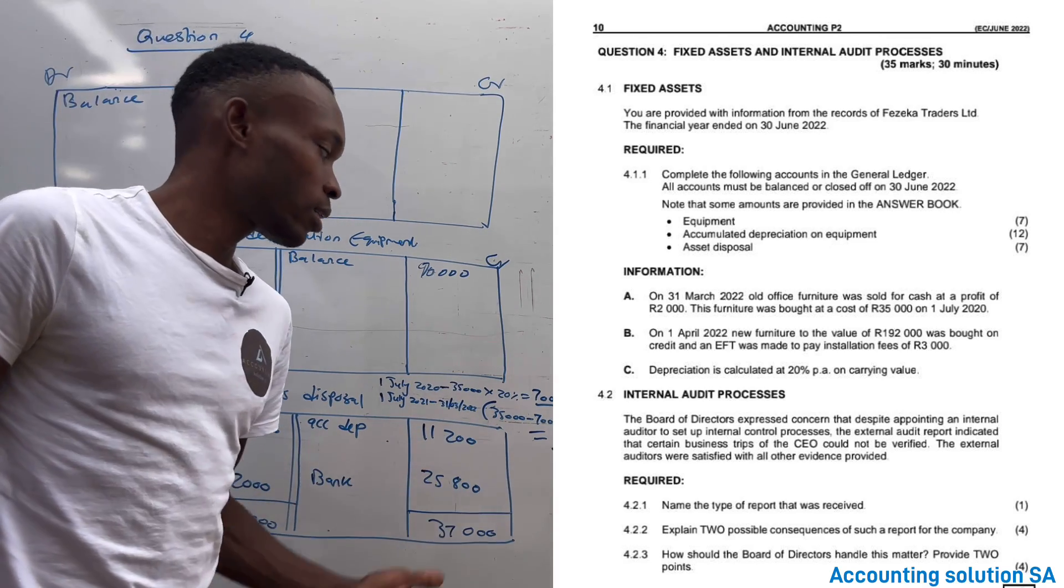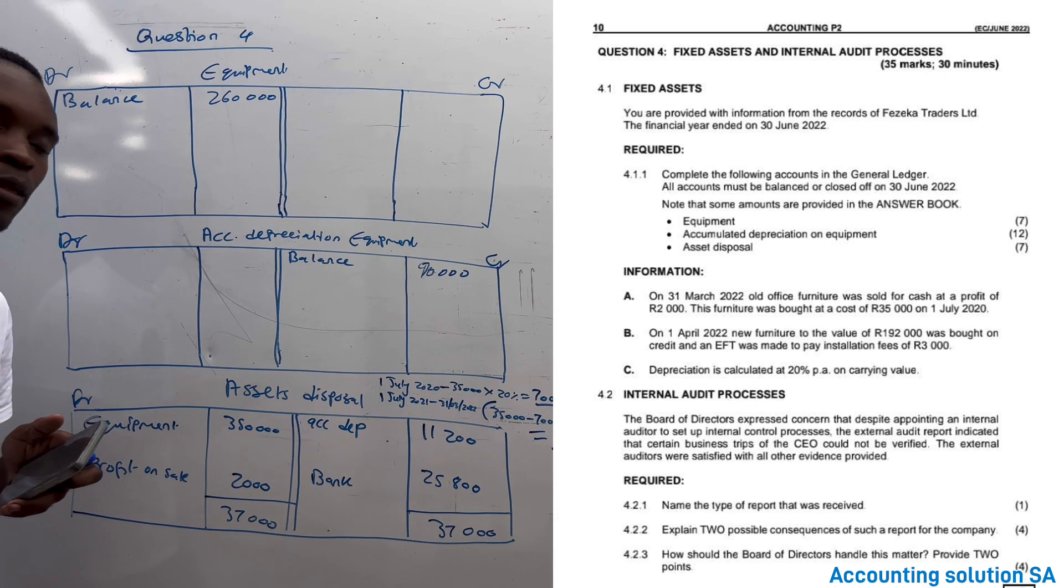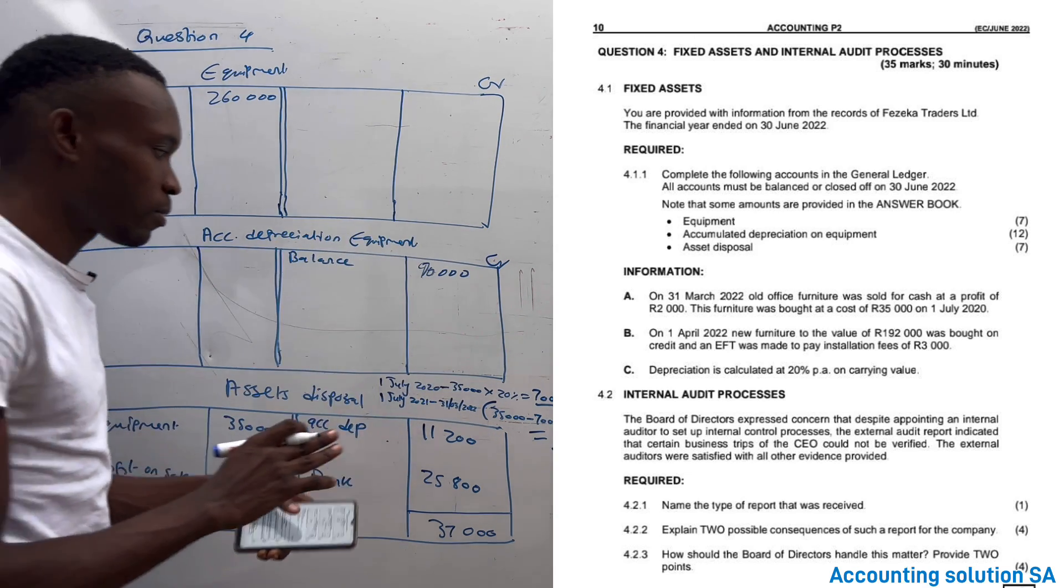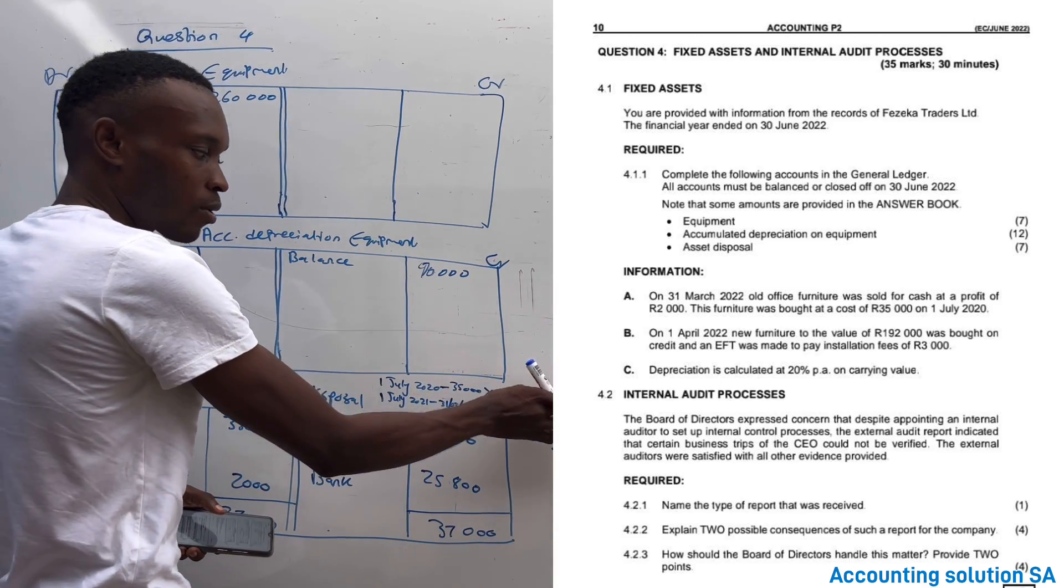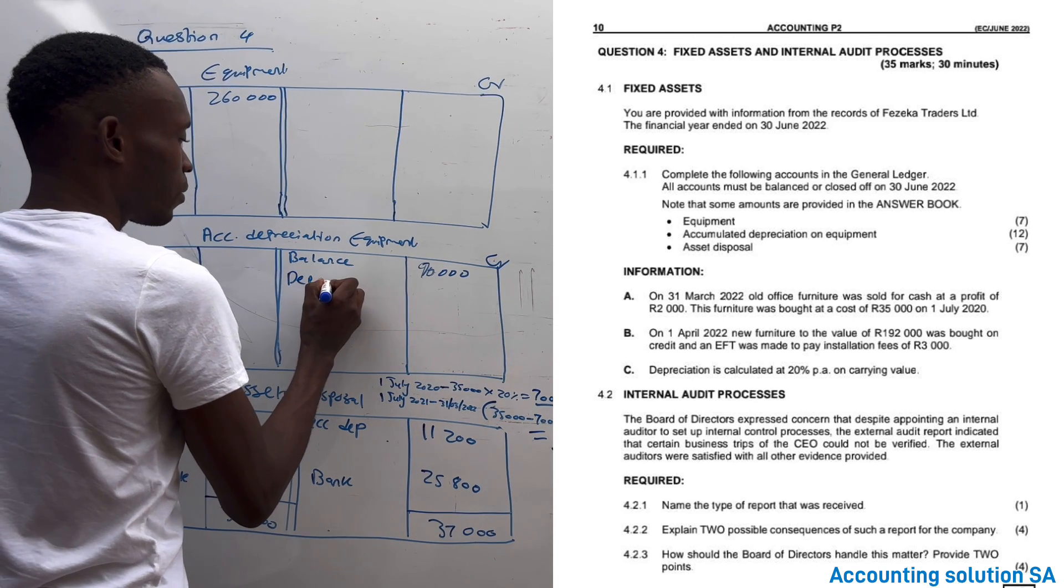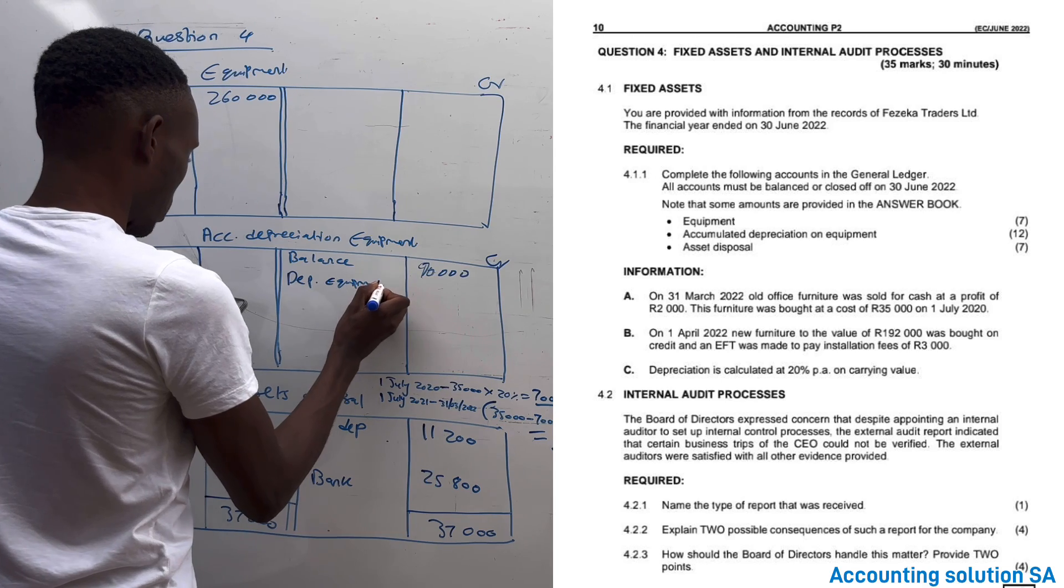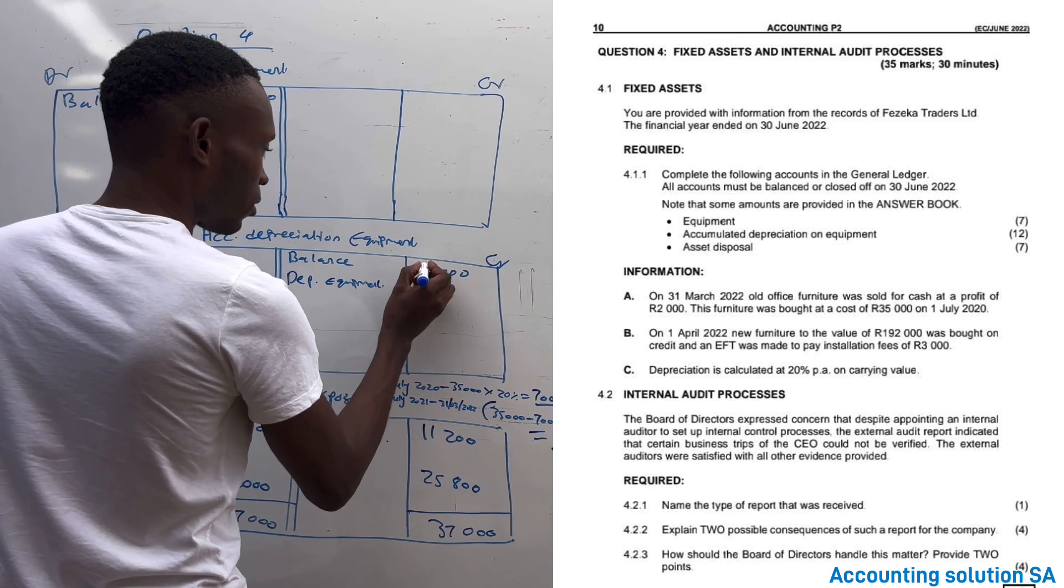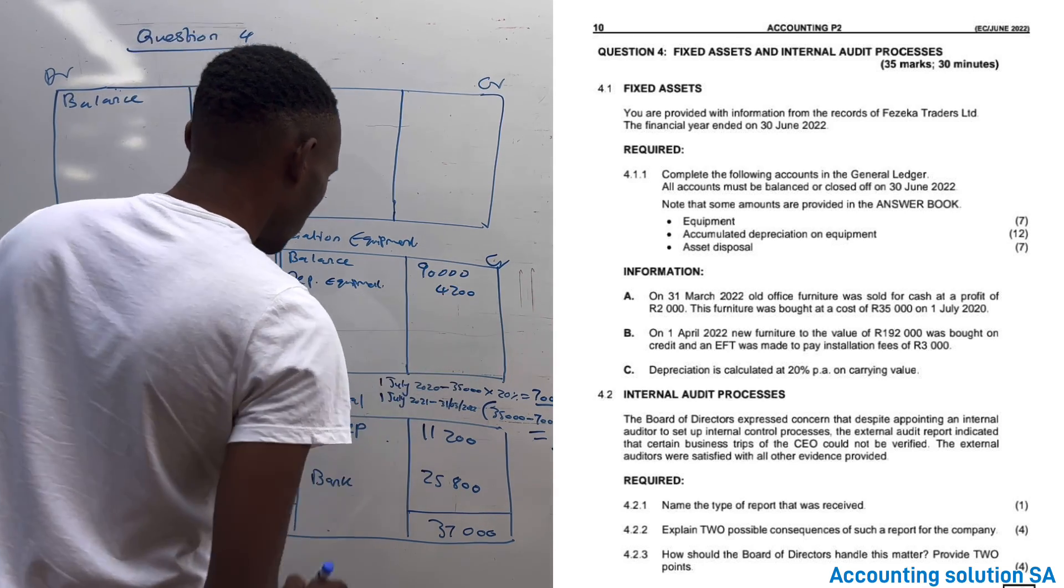Now, because we already calculated this depreciation and you know that under accumulated depreciation, we record this side only the current year depreciation, like the one of 4,200. This one, guys, of 7,000 is old. Don't include it. We have depreciation on equipment that has been sold, the amount is 4,200.